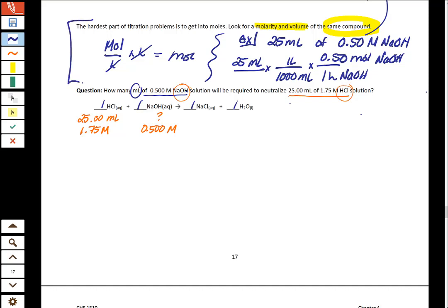So when we start to do a titration problem, we need to use this idea to get into moles first. So this idea said find the compound where you have the two of two numbers for that same compound. You have the volume, you have the molarity. So we're going to take our molarity and our volume and we're going to multiply them.